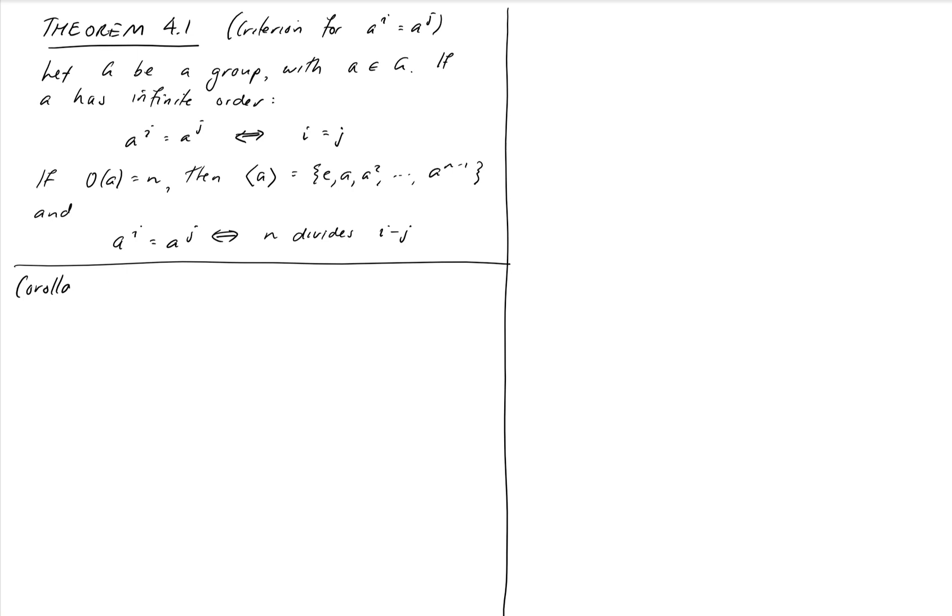So a corollary, just in case you haven't met that word before, is simply a small result that follows from a larger theorem. So it's really like a theorem, but in a sense it's kind of small because it follows directly from the theorem which is stated. So the first of these corollaries, corollaries always apply to the theorem before it. The first corollary is that the order of an element a is the same as the order of the cyclic subgroup that it generates.